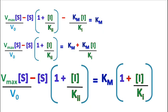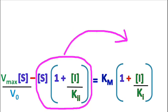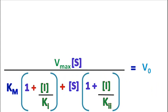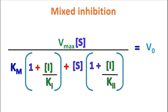Taking Km common on the right-hand side, the term becomes Km times bracket 1 plus I upon KII. Taking minus S times bracket 1 plus I upon KI to the right-hand side, we get Vmax times S upon v₀ is equal to Km times bracket 1 plus I upon KII, plus S times bracket 1 plus I upon KI. Making the final equation in terms of v₀, we get v₀ equals Vmax times S upon Km times bracket 1 plus I upon KII plus S times bracket 1 plus I upon KI. This is the equation for mixed inhibition.